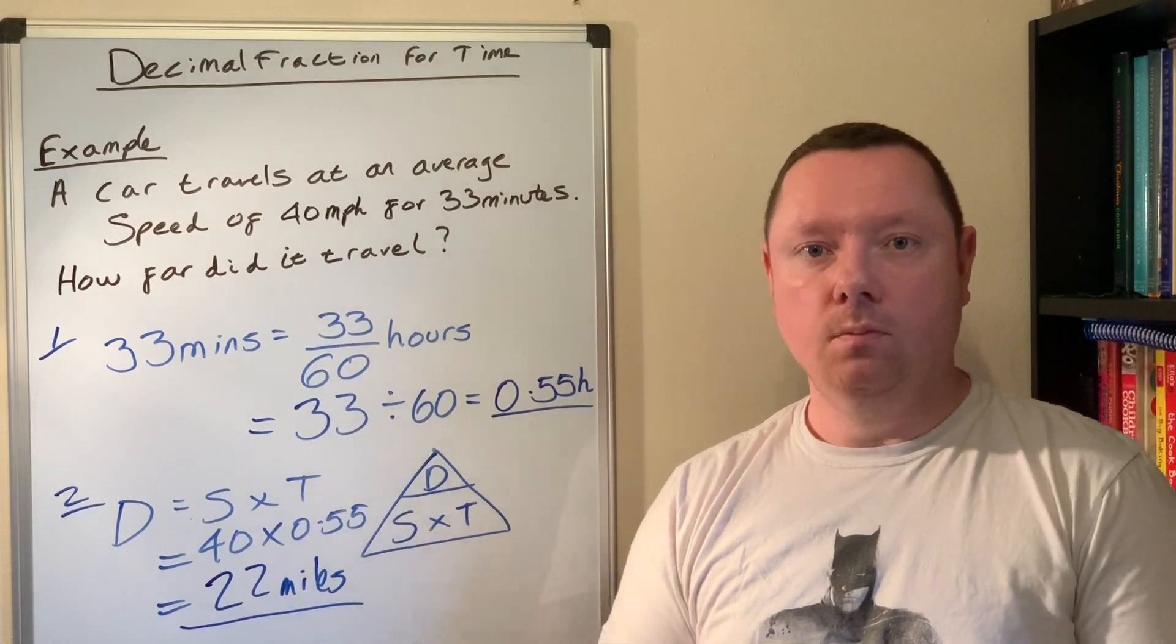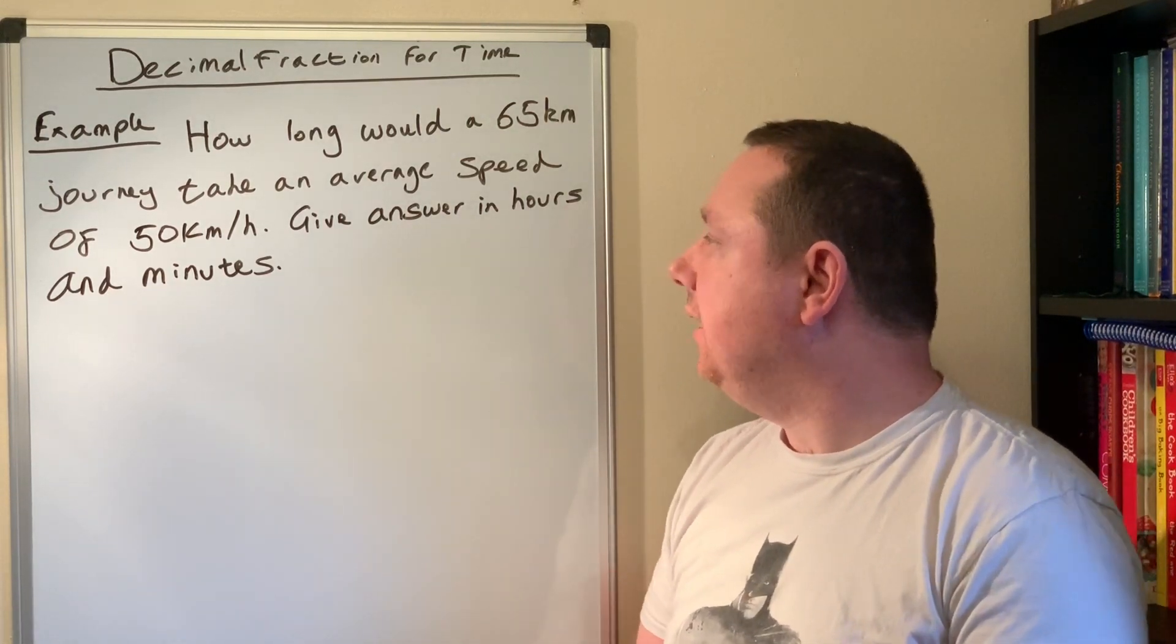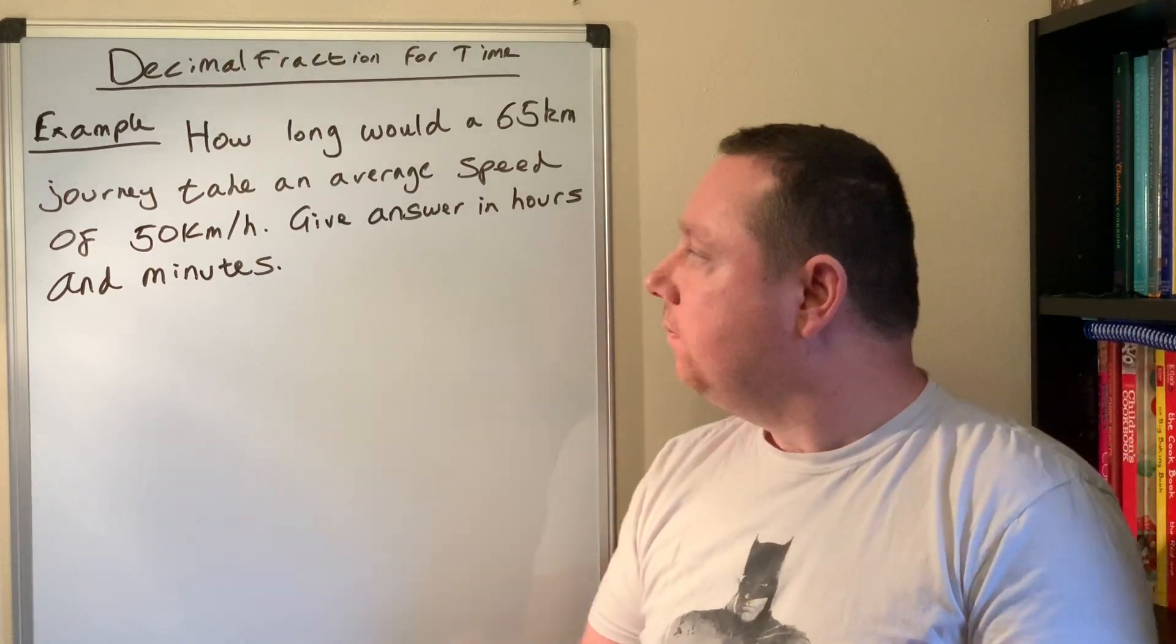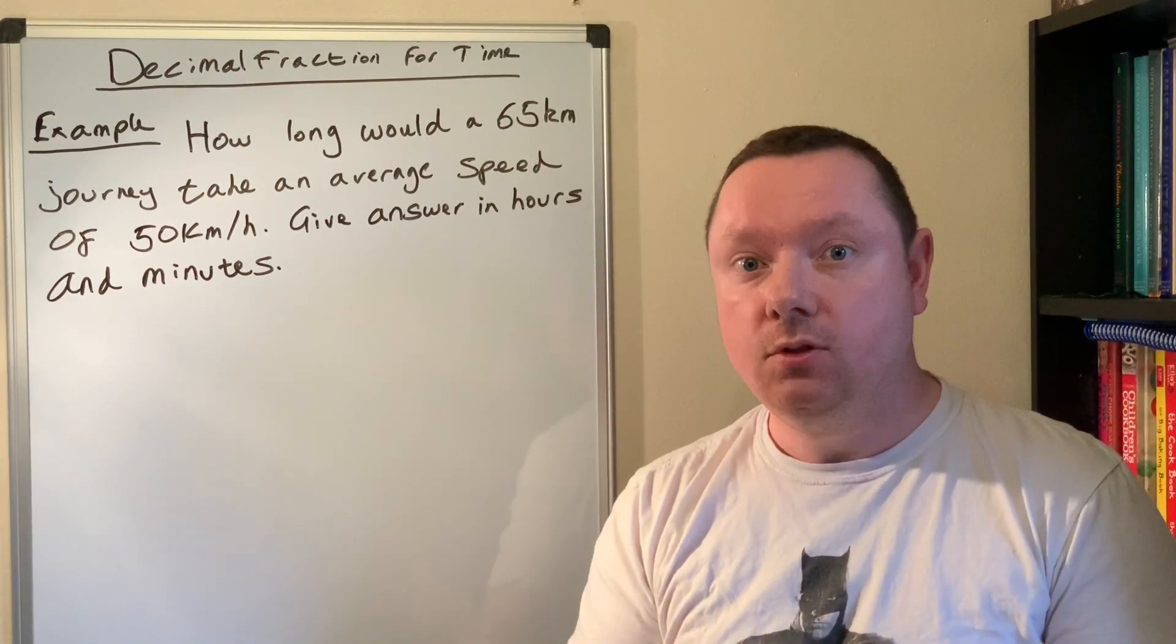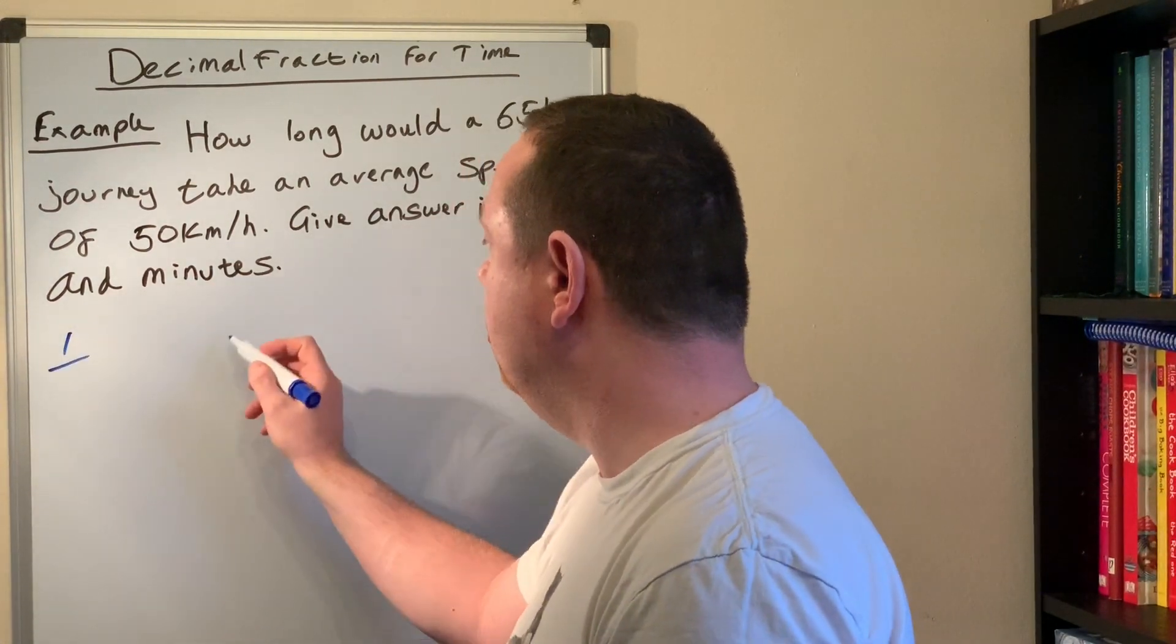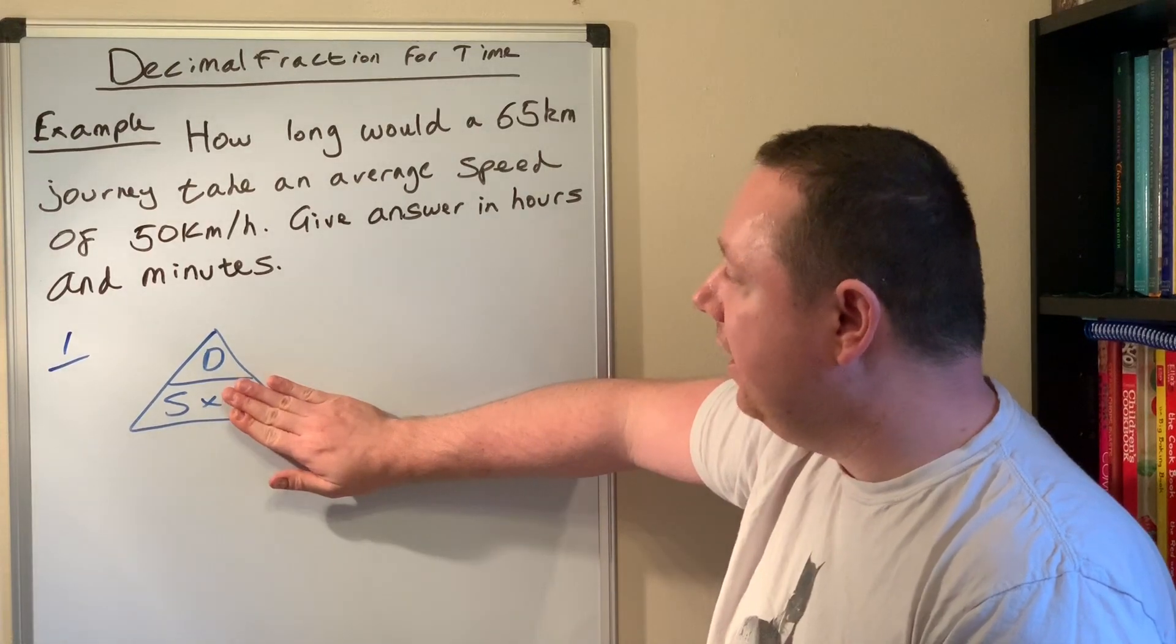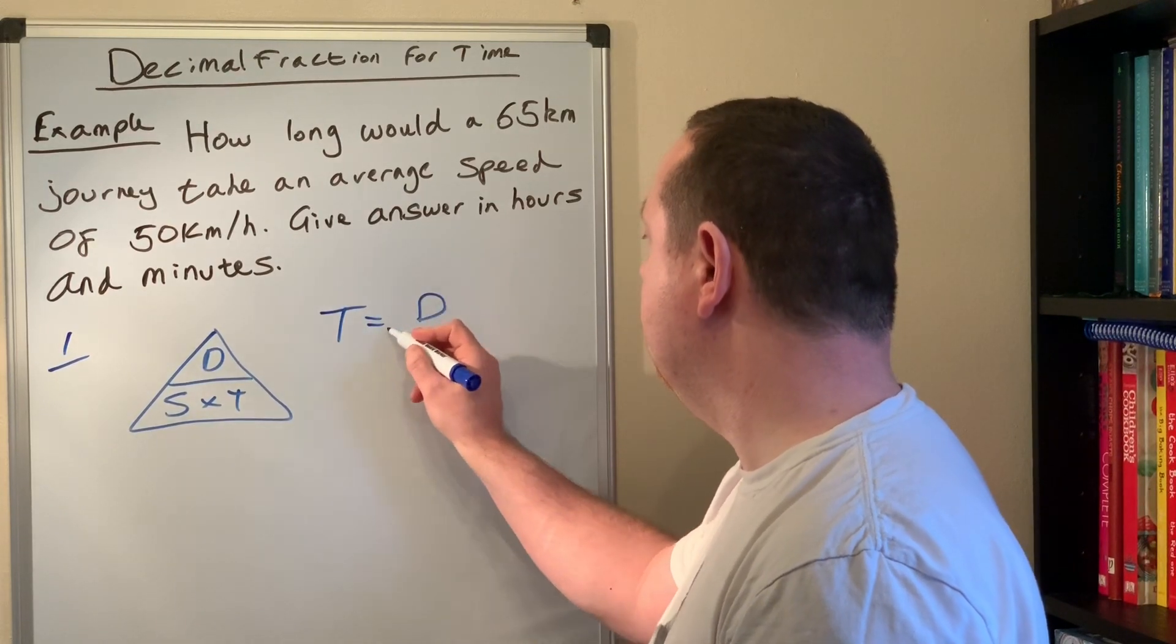Let's look at another example. How long would a 65 kilometer journey take at an average speed of 50 kilometers per hour? And you have to give your answer in hours and minutes. So there's no conversion to do yet because I've not worked out the time. Step one in this case is just to draw my distance speed time triangle. I'm looking for the time, so I cover up the T and it says D over S, so I can write that: T equals D divided by S.